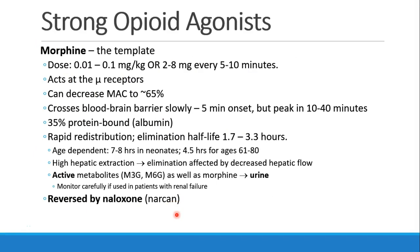The first strong opioid agonist we'll discuss is morphine, which is the template we'll use to compare other opioids. Morphine is given at doses of 0.01 to 0.1 mg/kg, or about 2 to 8 mg IV every 5 to 10 minutes. It acts at mu receptors and can decrease MAC during anesthesia to about 65%. It crosses the blood-brain barrier slowly, with an onset of about 5 minutes and a peak in 10 to 40 minutes. It is partially protein-bound, undergoes rapid redistribution, and its elimination half-life is about 1.5 to 3 hours — longer in neonates and older patients.